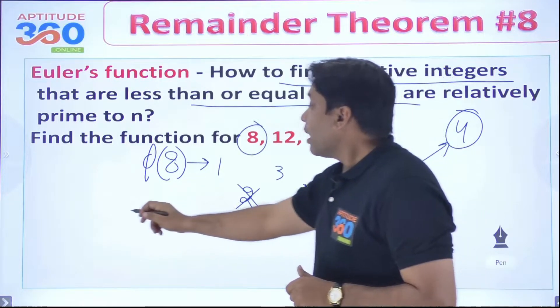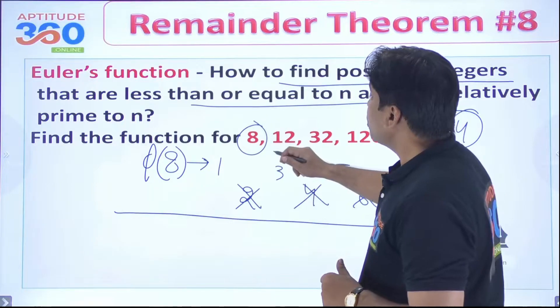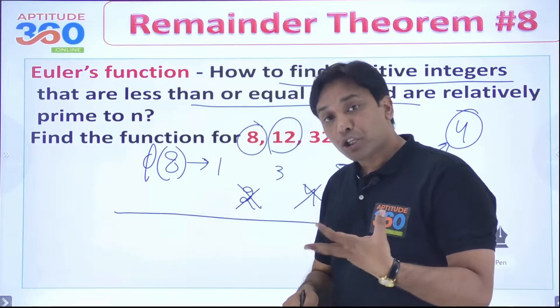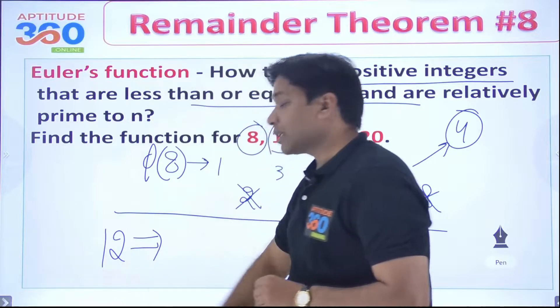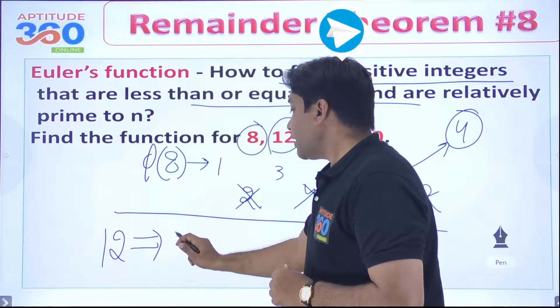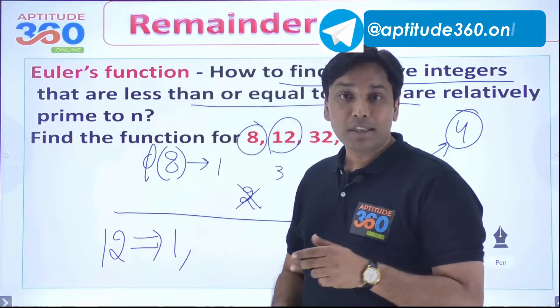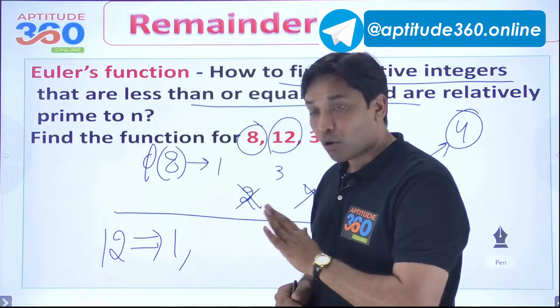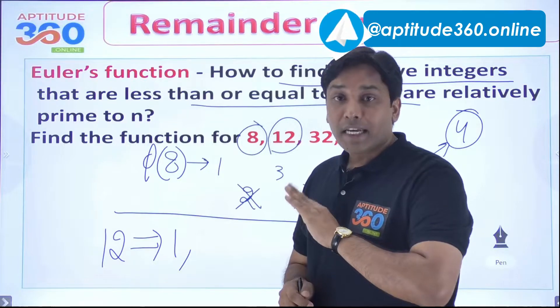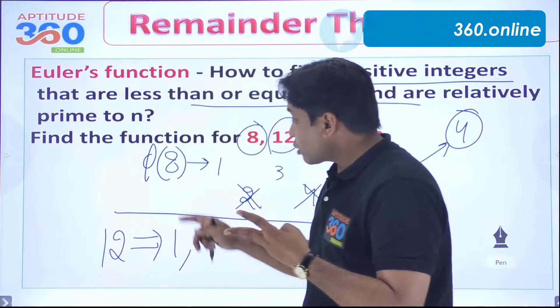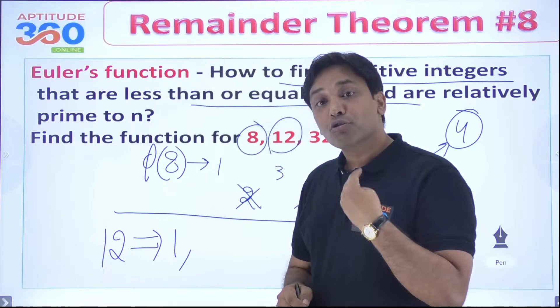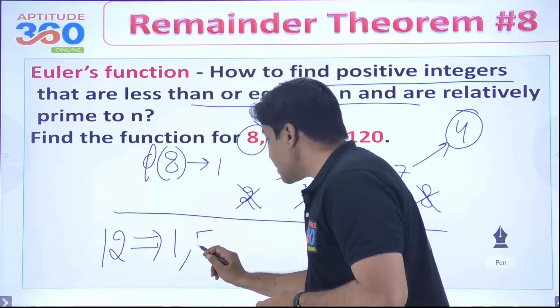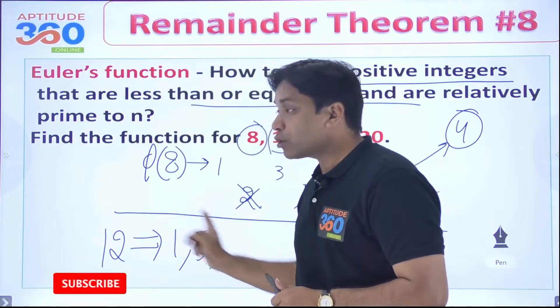I am just figuring it out for you to understand what is this function all about and then probably we will be talking about the shortcut. Now, try to understand this thing. For 12, we have got 1. 1 and 12, they do not have any factor in common. But 2 cannot be there, 3 cannot be there because 3 into 4 is 12. How about 4? 4 can also not be a possibility. How about 5? 5 is a possibility because 5 and 12, they don't have any factor in common.